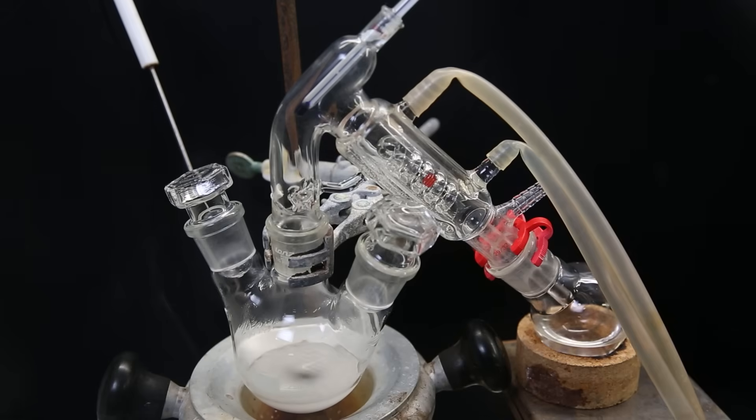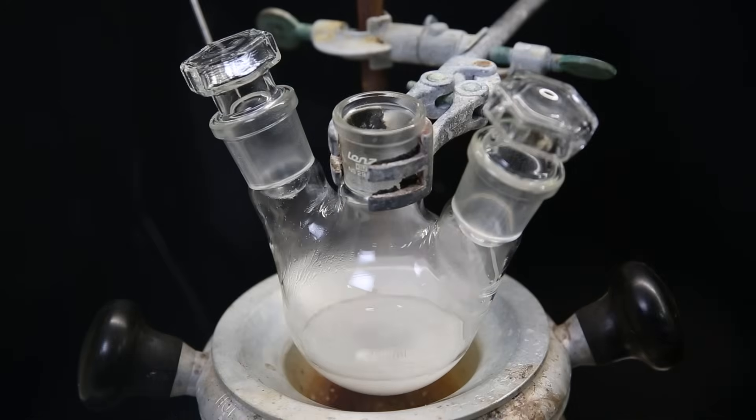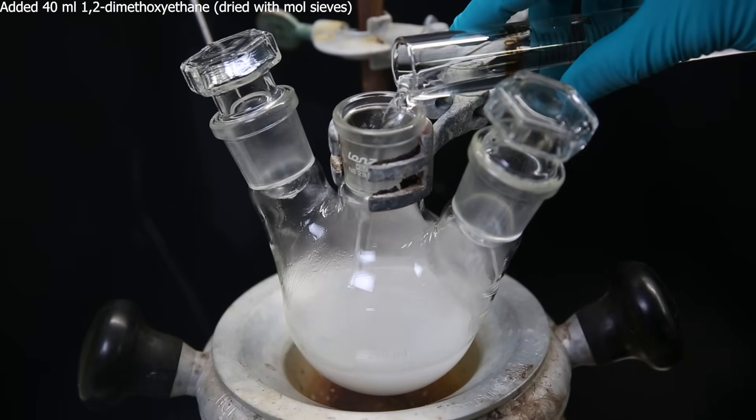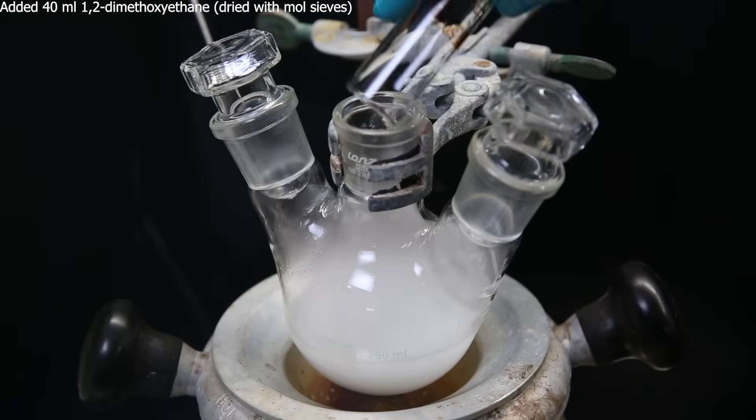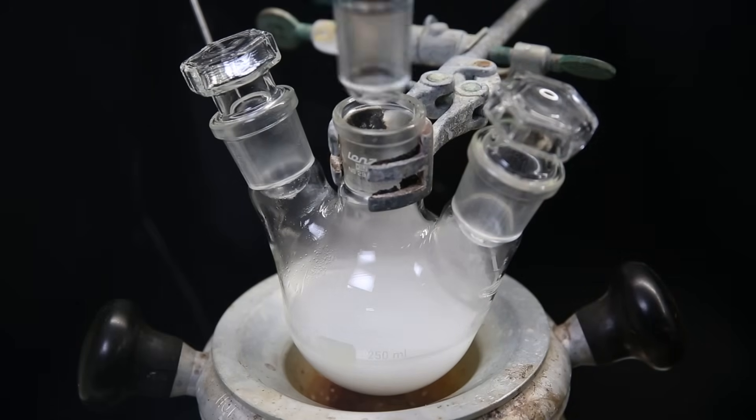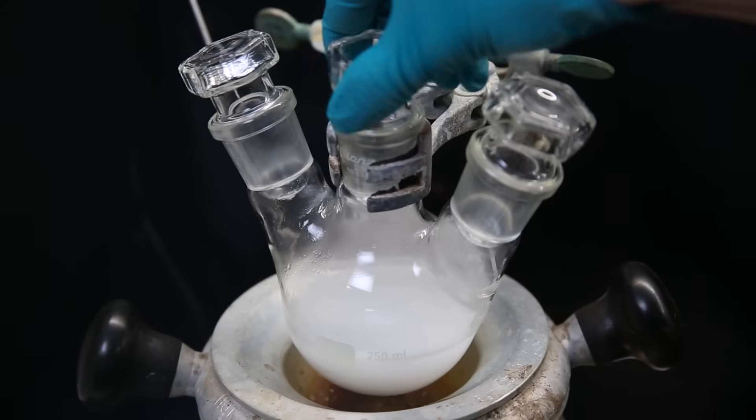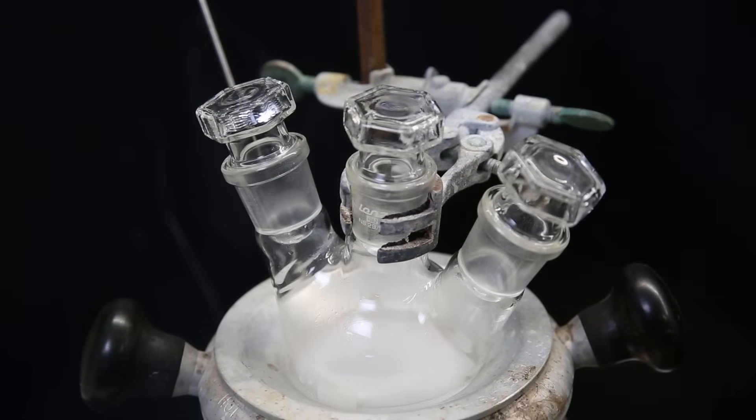So I remove it off heat, and quickly a solid starts crystallizing out of solution. The solid is 9BBN, but to make sure it's pure, I will have to recrystallize it two times. I remove the short path and then add 40 ml of dry 1,2-dimethoxyethane. I stopper the flask and set it back in the heating mantle, and start heating until all of it dissolves.